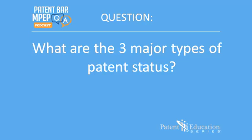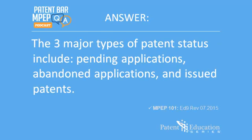Again, what are the three major types of patent status? As shown in Chapter 100, the three major types of patent status include pending applications, abandoned applications, and issued patents.